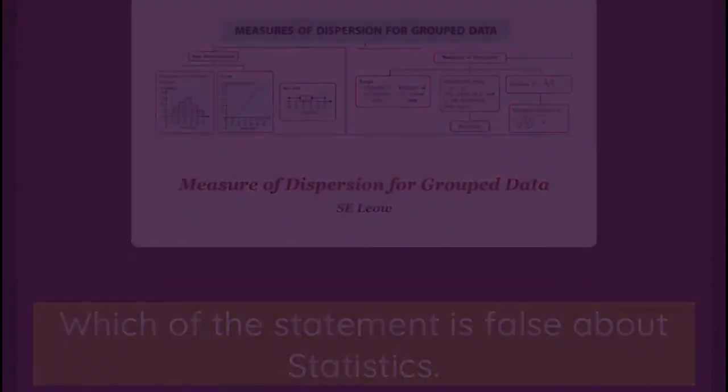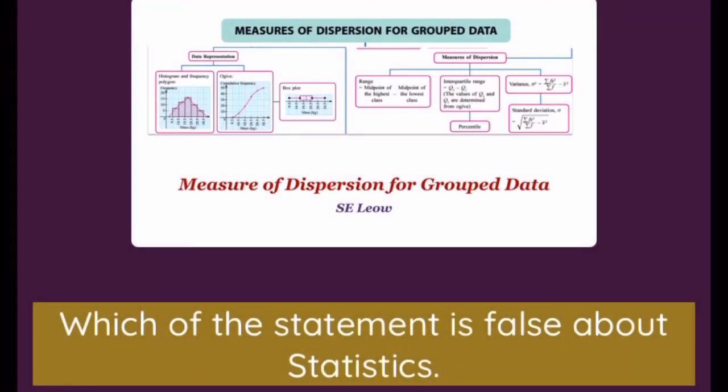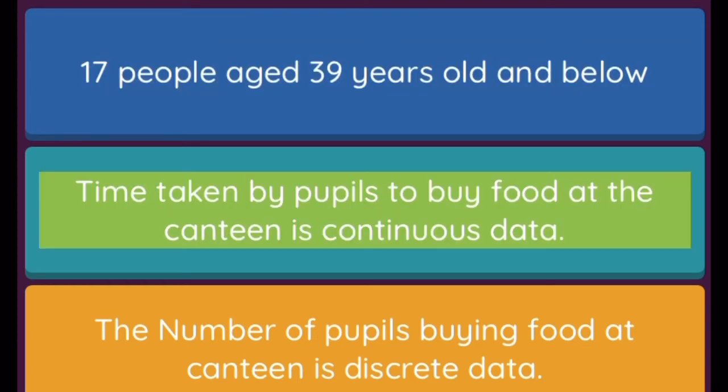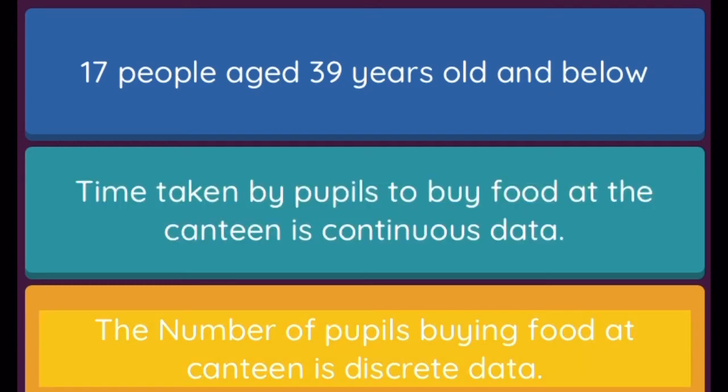Question: Which of the statements is false about statistics? Option 1: 17 people aged 39 years old and below. Option 2: Time taken by pupils to buy food at the canteen is continuous data. Option 3: The number of pupils buying food at canteen is discrete data. Option 4: Cumulative frequency is not always equal to total frequency.